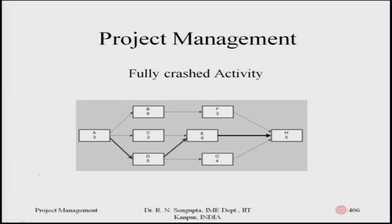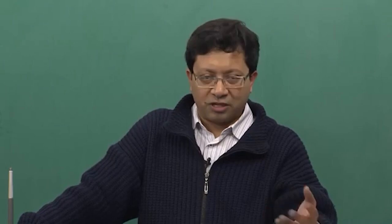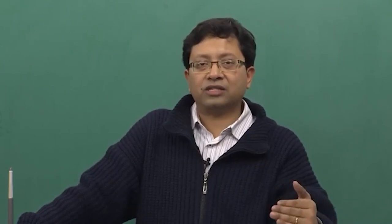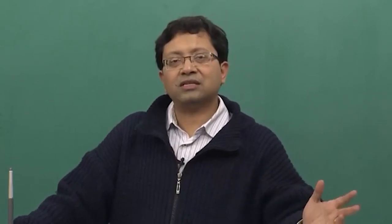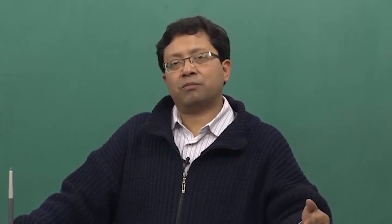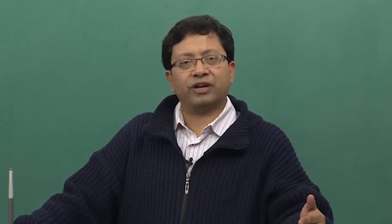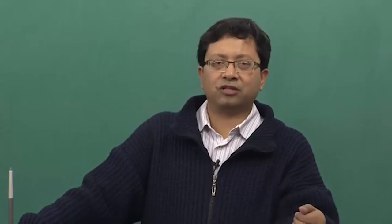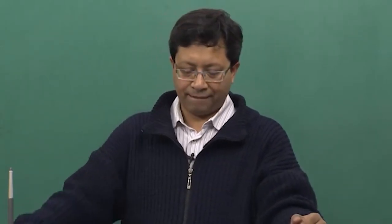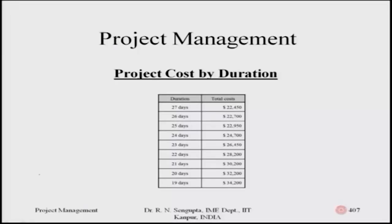The fully crashed activities are given as stated. The only difference from the initial problem is that the first used activity-on-arc notation and this one uses activity-on-node — that makes little practical difference. The key conceptual difference is that this problem introduces variable costs alongside fixed costs. The project duration table runs from twenty-seven days down to nineteen days. Using forward and backward pass methods, total slack, and free slack concepts — which I urge students to solve themselves in an Excel sheet before resuming — the total cost at twenty-seven days is twenty-two thousand four hundred fifty, increasing to thirty-four thousand two hundred at nineteen days.